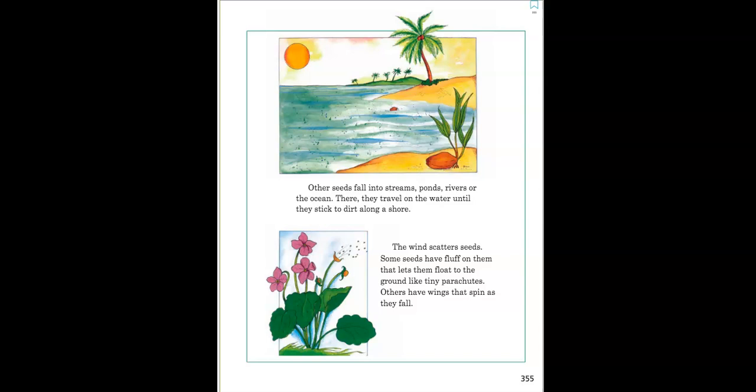The wind scatters seeds. Some seeds have fluff on them that lets them float to the ground like tiny parachutes. Others have wings that spin as they fall.